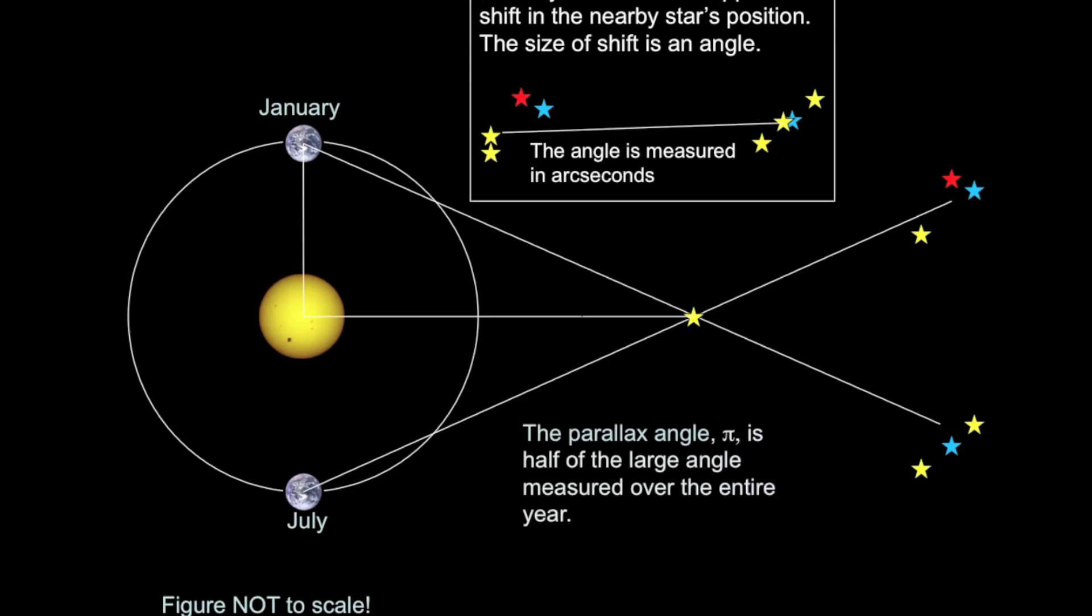The parallax angle is half of that big angle that I just defined. And so if you measure the big angle over the course of the year, you just take half, and that's the interior angle, or the parallax angle, for this right triangle that we defined earlier.